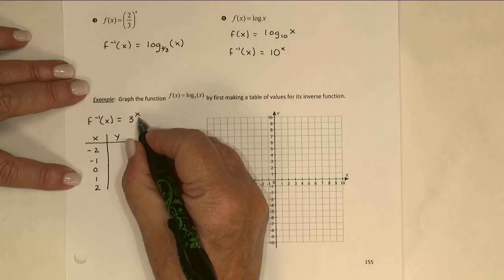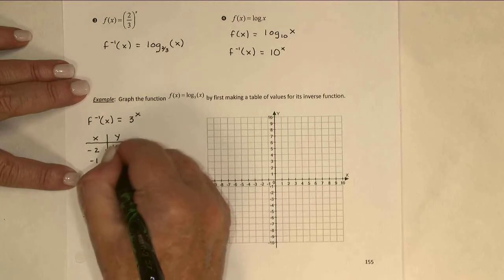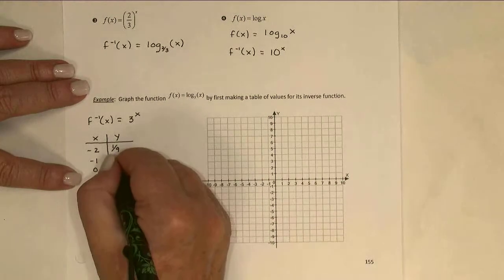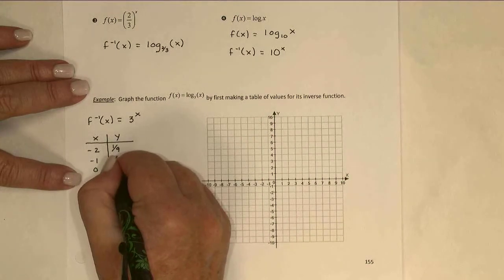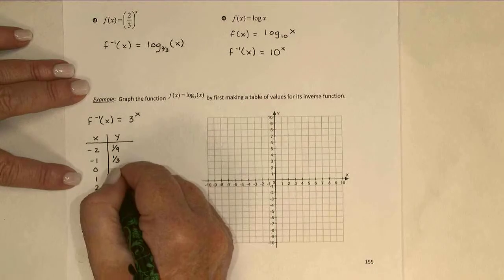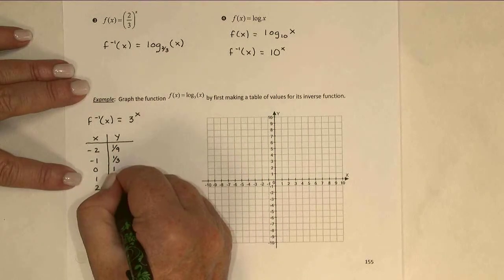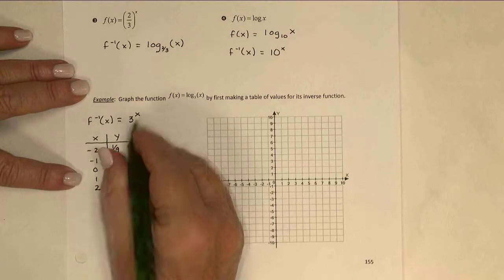3 to the negative second would be 1 over 3 to the second, 1 ninth. 3 to the negative 1, 1 third. 3 to the 0 is 1. 3 to the first is 3. And 3 to the second would be 9.